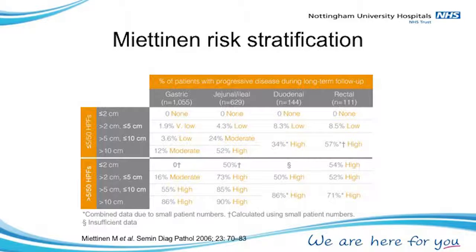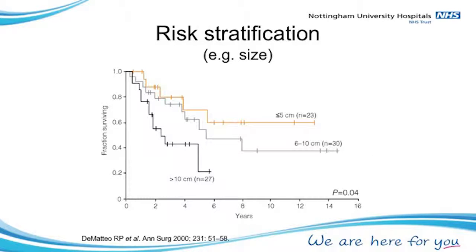NICE have used the Miettinen criteria, though I personally don't favour that table. To show that it matters — if you just look at size and outcome from the original publication, if the tumour is more than 10 centimetres the risk of it coming back and of not surviving becomes very high indeed.